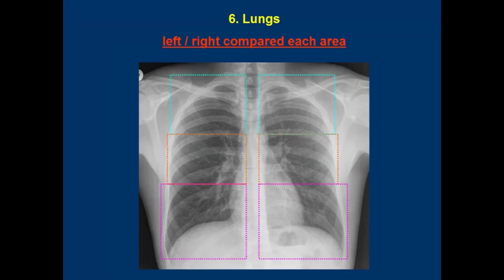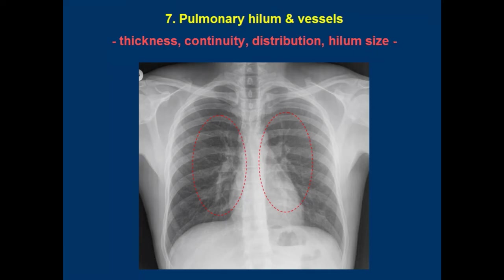6. Lungs. Analyze by comparing left and right transparency of each area, top to bottom or the other way around — it doesn't matter as long as you don't miss any areas. Choose the way you like best and stick to it, but never look up and down on the same side. 7. Pulmonary hilum and vessels. Check thickness, continuity, distribution, and hilum size, also bilaterally compared. A quick way to evaluate hilum size is by comparing it to a dorsal rib — they are about the same thickness. Just make sure you're looking at the main artery, not some lobar branch.